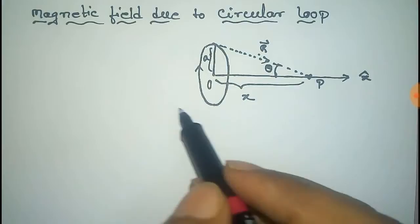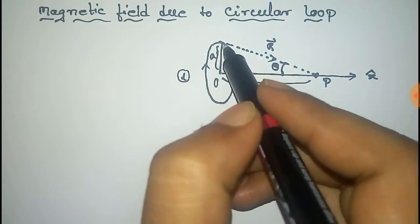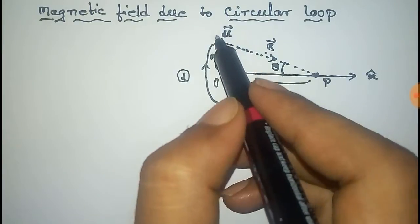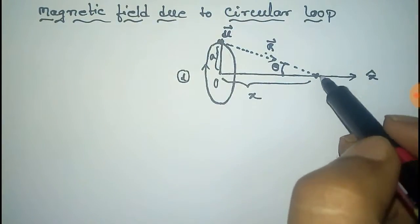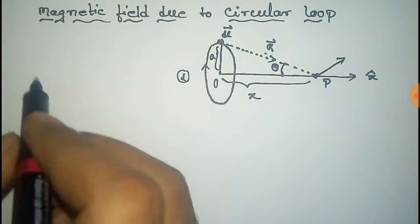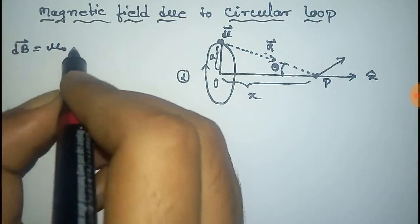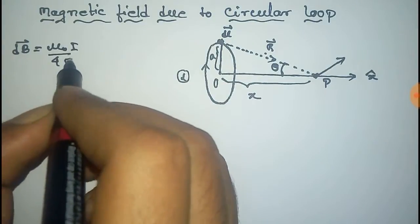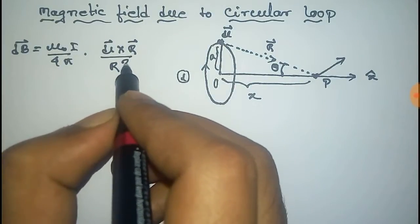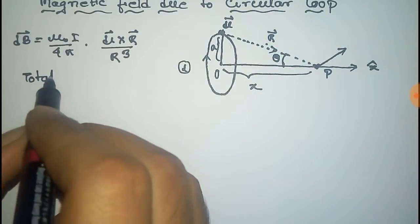Now if the total length of the loop is L, then for a small length dl, the magnetic field at P would be directed in this direction — that is the dB vector. So from the Biot-Savart law we get that dB vector equals mu-naught i by four pi, dl cross r vector by r cube. The total field for the total loop would be the integral.